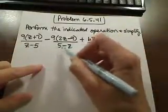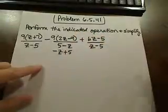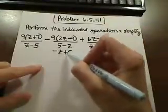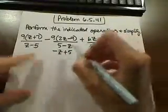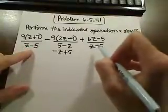If I were to rewrite this denominator in descending order, that would actually become negative z plus 5. And this is very similar to these other two denominators. In fact, if we factor out a negative, it will actually be the same.